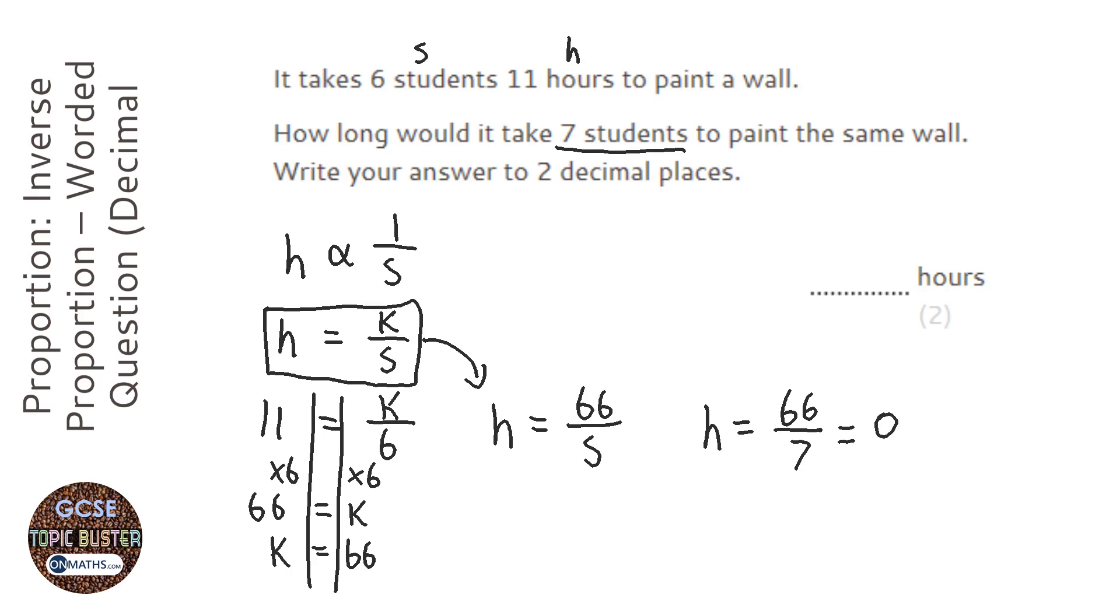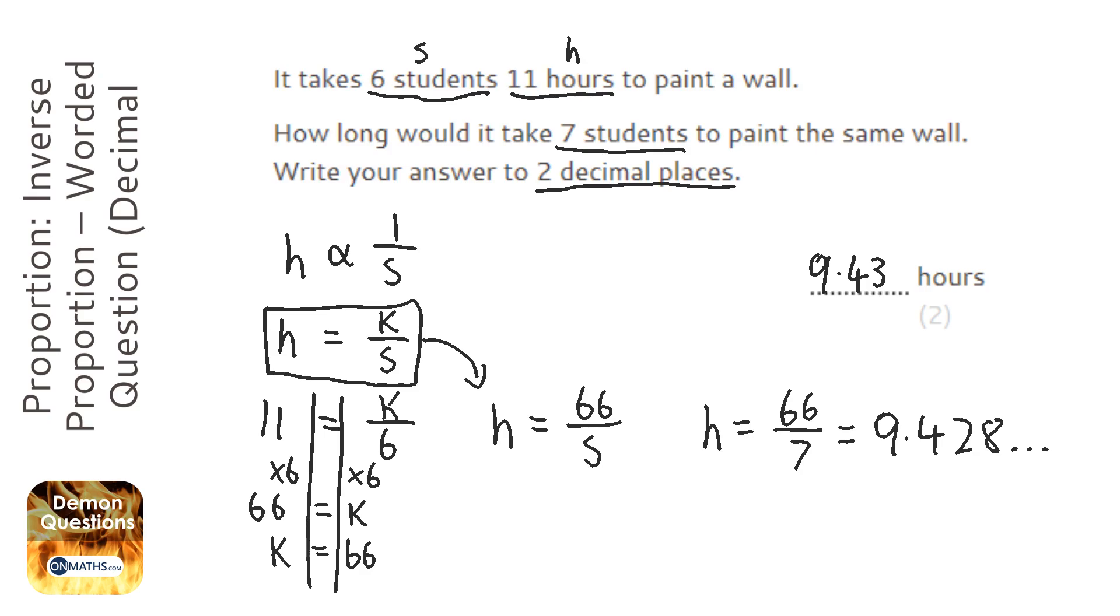So let's type that in: 66 divided by 7, and I get the answer of 9.428. It says it wants two decimal places, so it's 9.43. A way of checking this is it took 6 students 11 hours, so you'd think with 7 students it would take less time, which it does here.